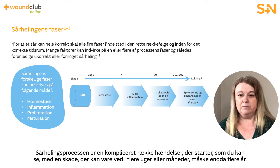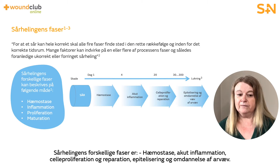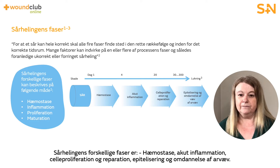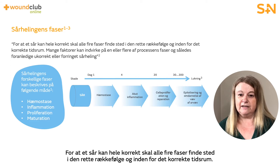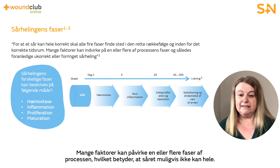The wound healing process is a complex series of events that starts with an injury and can continue for weeks, months or even years. The phases of wound healing are: haemostasis, acute inflammation, cell proliferation and repair, and epithelialisation and remodelling of scar tissue. For a wound to heal successfully, all four phases must occur in the proper sequence and time frame. Many factors can interfere with one or more phases of this process, meaning that the wound could fail to heal.